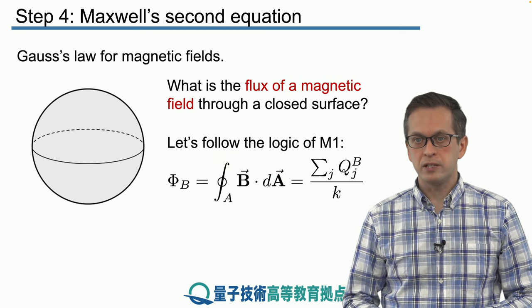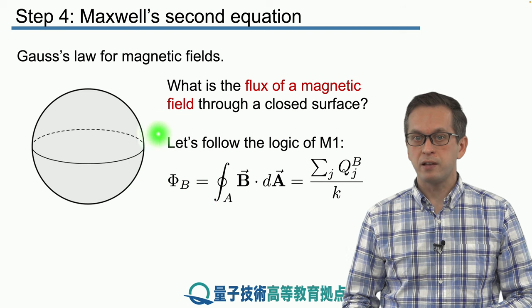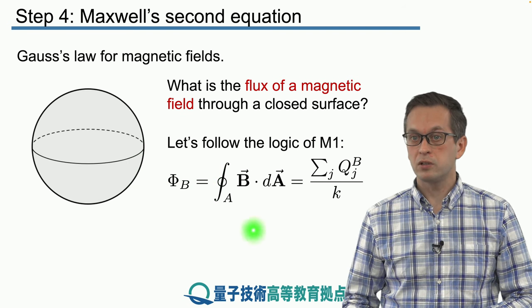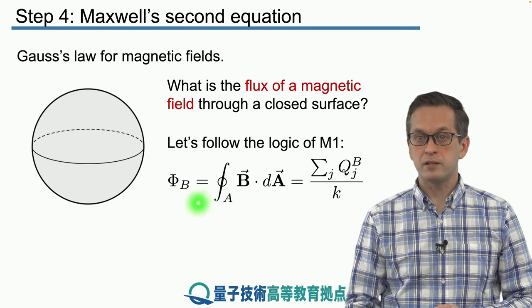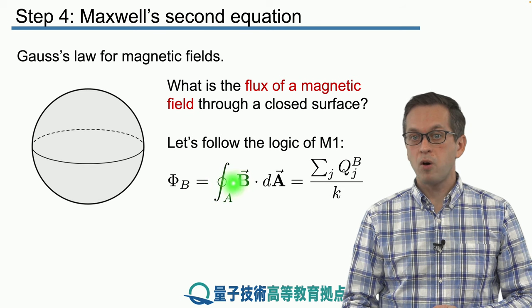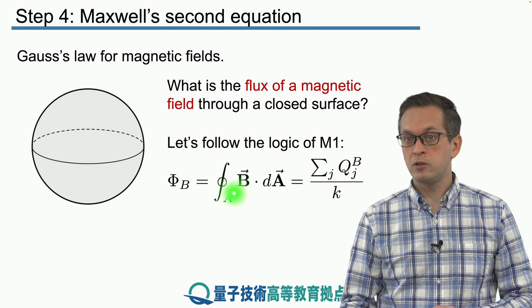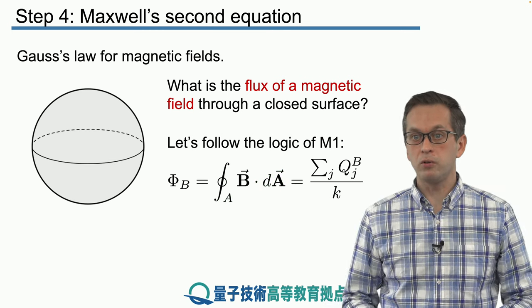So let's just follow the logic of Maxwell's first equation and define the magnetic flux going through the surface as the following surface integral. We are integrating over a closed area represented by this little circle of the magnetic field and we take the dot product with the area vectors all located on the surface.